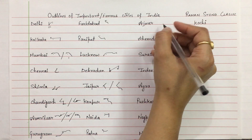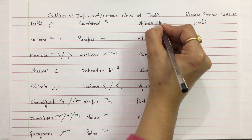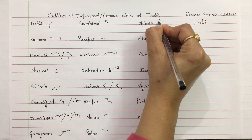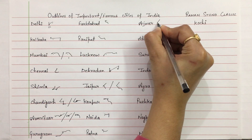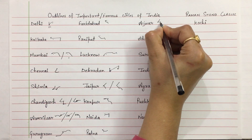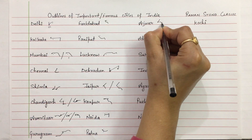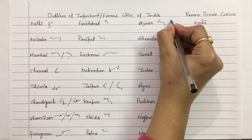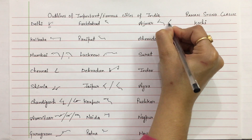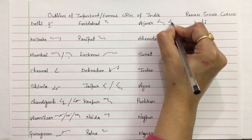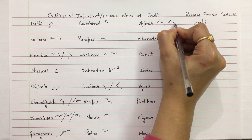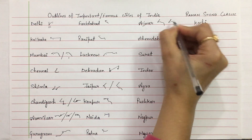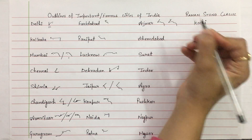Ajmer — above the line. J, M, and R. Ajmer.